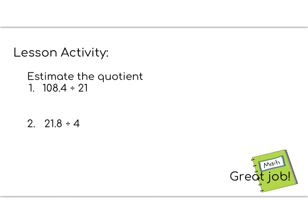All right, fifth graders, it's time for the lesson activity. I'll get you started. This says estimate the quotient. So the first thing that we want to do is we want to round our divisor to a nice easy number. 21 is close to, let's call it 20.